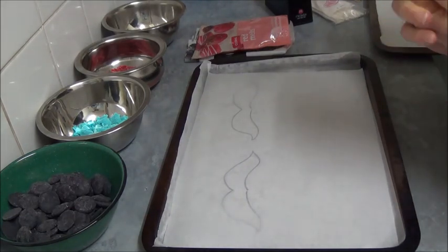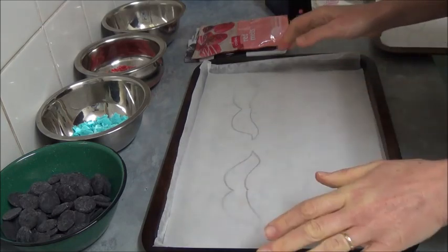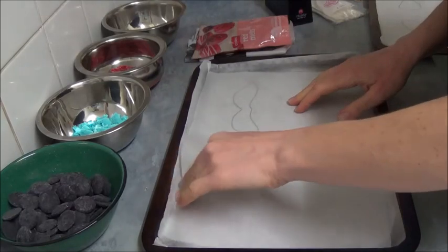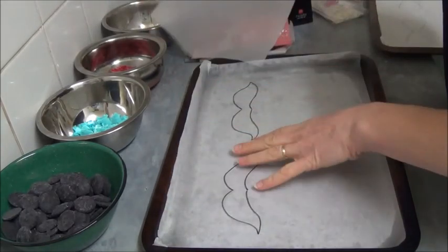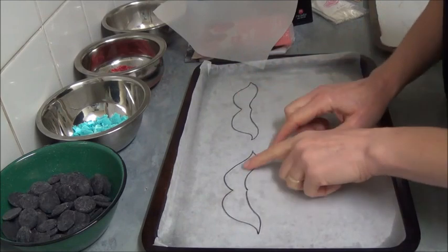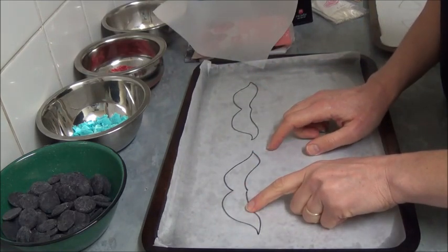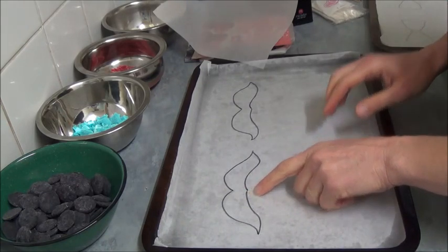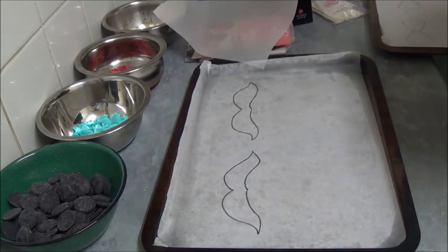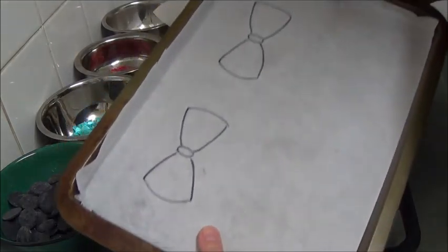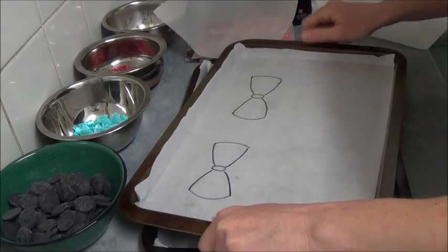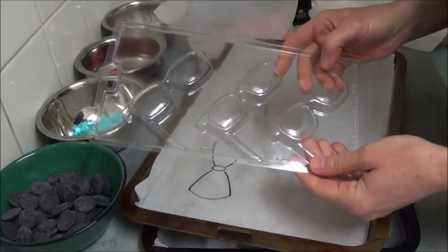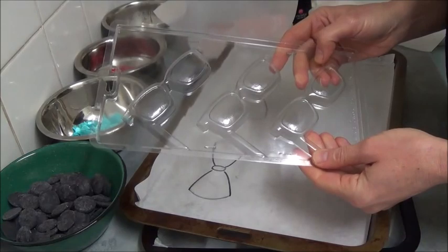What we need for this recipe is baking trays. We simply place baking paper on the base of a tray and draw with a pencil or marker, basically moustache, bow ties, and for 3D glasses we will use a 3D glasses chocolate mold.